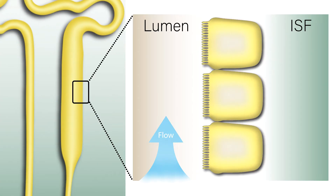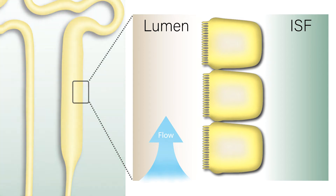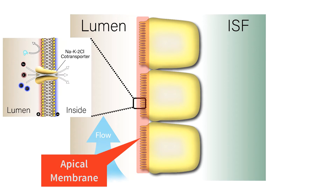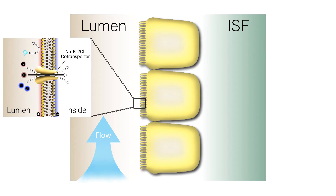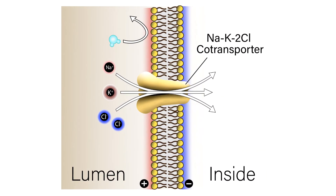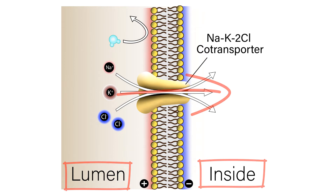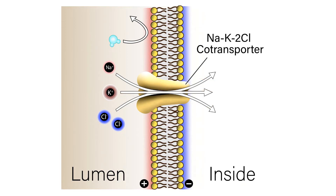At the thick ascending limb, the main transport process used for countercurrent multiplication is accomplished by the sodium-potassium-2-chloride transporter, located on the apical membrane of the epithelial cells. This transporter is responsible for the reabsorption of a sodium ion, a potassium ion, and two chloride ions — transported from the tubular lumen into the cell. The energy for this transport is provided by the very favorable electrochemical gradient for sodium to move from the tubular lumen into the cell.